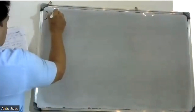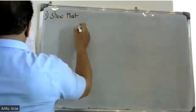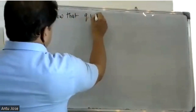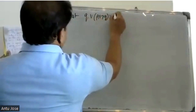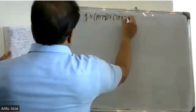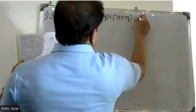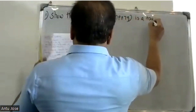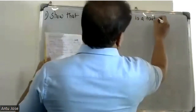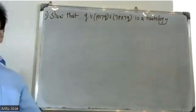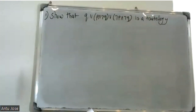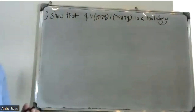Show that Q or P, and negation Q, or negation P, and negation Q is a tautology. That is the last question. Show that Q or P and negation Q or negation P and negation Q is a tautology. Then the variable—